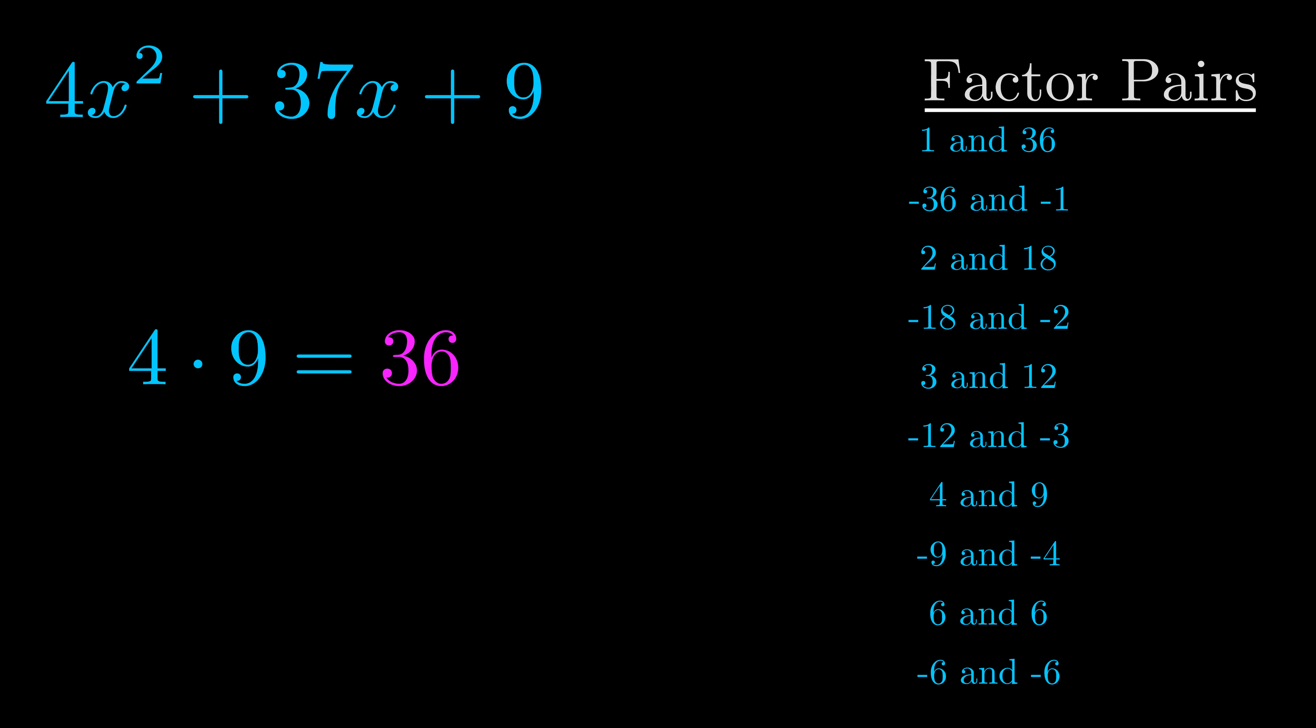The b value is the coefficient on the x term. That's the middle term, the one that we haven't done anything with yet. And really this is the only factor pair that we need.